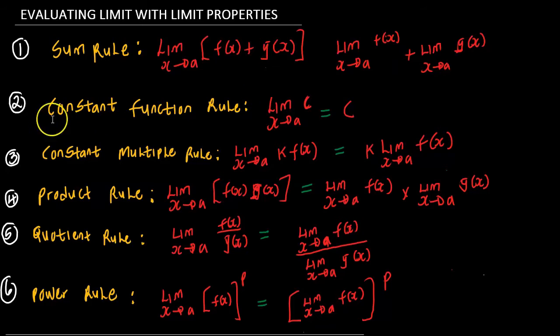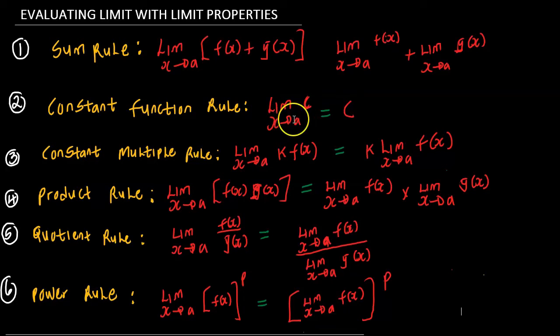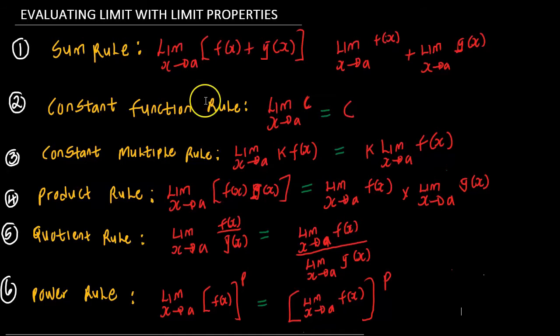The second property is what we know as the constant function rule. This rule states that the limit of a constant function is equal to the constant, as you can see.